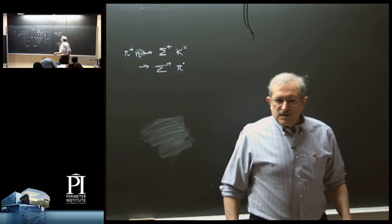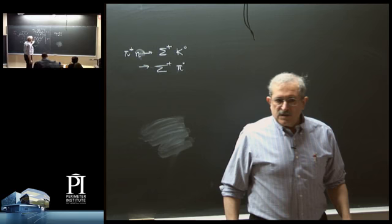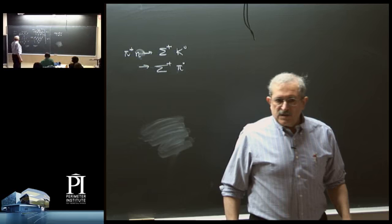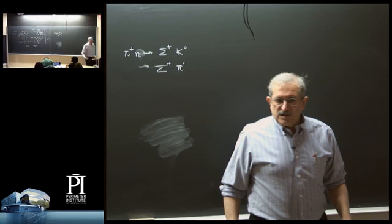Things with strangeness have a different mass. The mass splitting here is about 120 MeV; similarly about 130 MeV between successive strangeness levels. Particles with strangeness minus 1 and strangeness plus 1 differ from those with strangeness 0. So somehow, things with extra strangeness are also heavier in a certain regular way than things with zero strangeness.